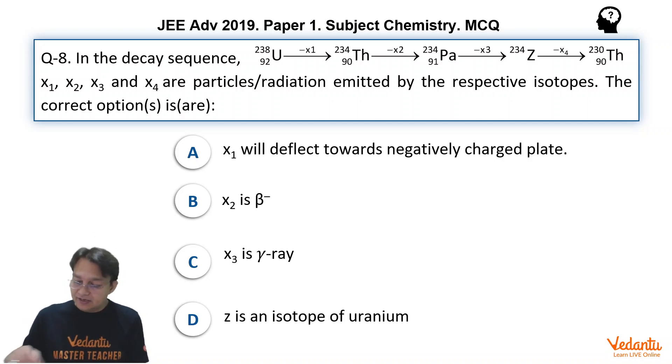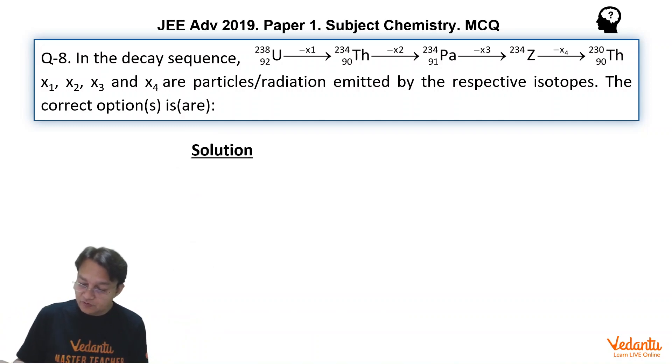So as you can see in the first option, if you see 238-92 Uranium and it is changing into what? It is changing into Thorium. So this X1 must be an alpha particle. Why?